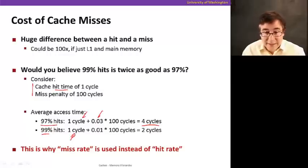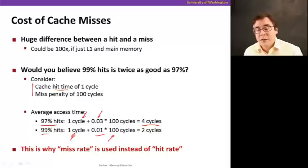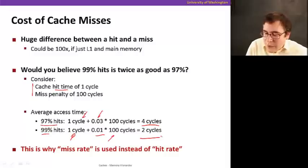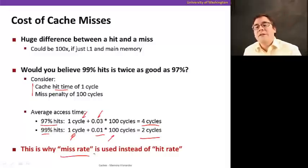But now if you look at this number for 99%, that'll be one cycle for just the hit time, depending on whether it's there or not, plus 1% of the time you're going to pay 100 cycles. So that means the average cycle is 2. There's a 2x difference in average access time when you go from 97% hit rate to 99% hit rate. That's why we often use miss rate more often than we use hit rate.